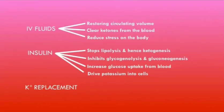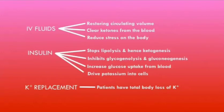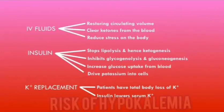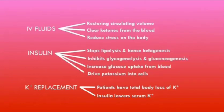Potassium replacement is very important in DKA because patients have a total body loss of potassium and intracellular potassium levels are very low. Another reason potassium replacement is given is because when insulin therapy is started, insulin lowers serum potassium by shifting it from blood into cells. Although this restores intracellular potassium, serum potassium levels will start to decrease and there is a risk of hypokalemia, so potassium replacement is given to reduce this risk.